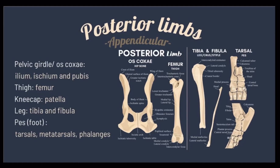Our topic for today is about the appendicular limb, or posterior limb, or hind limb. The pelvic girdle or os coxae is comprised of the ilium, ischium, and pubes.